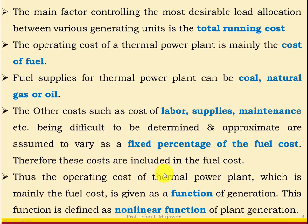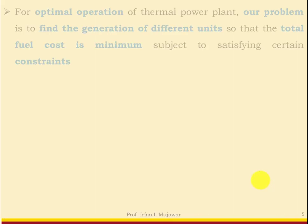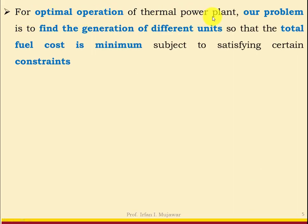Thus the operating cost of a thermal power plant, which is mainly the fuel cost, is given as a function of generation. The operating cost depends on generation — higher generation means higher operating cost. This function is not linear but a non-linear function of plant generation. For optimal operation, our problem is to find the generation of different units so that total fuel cost is minimum subject to certain constraints. This is nothing but our economic load dispatch.